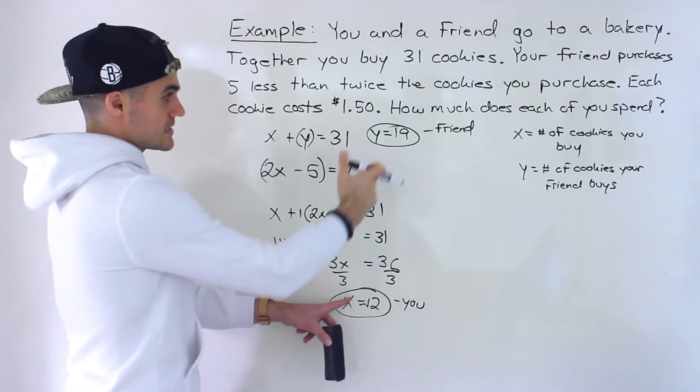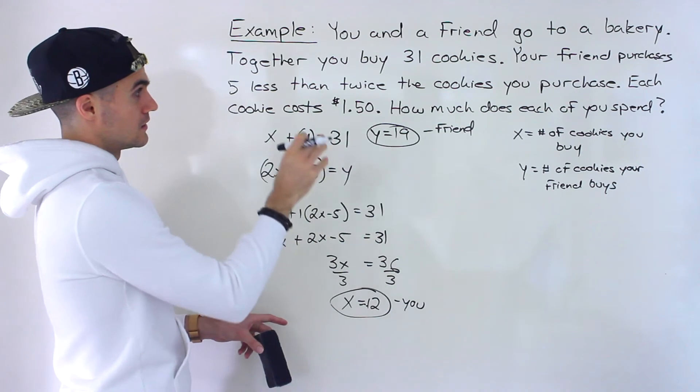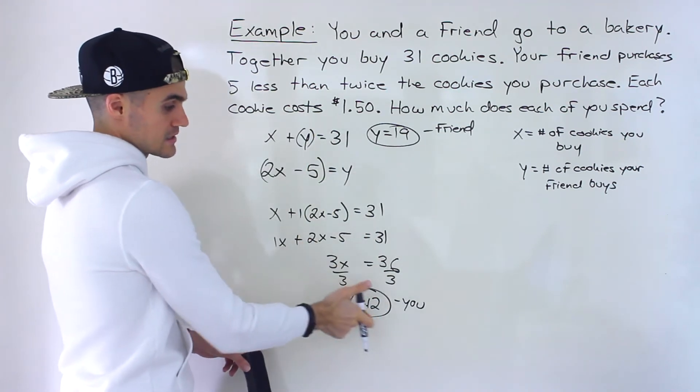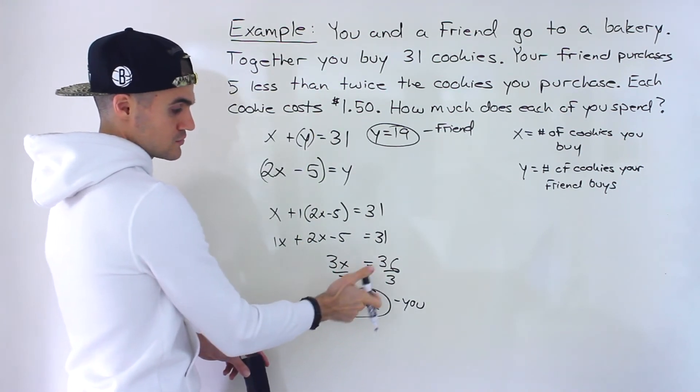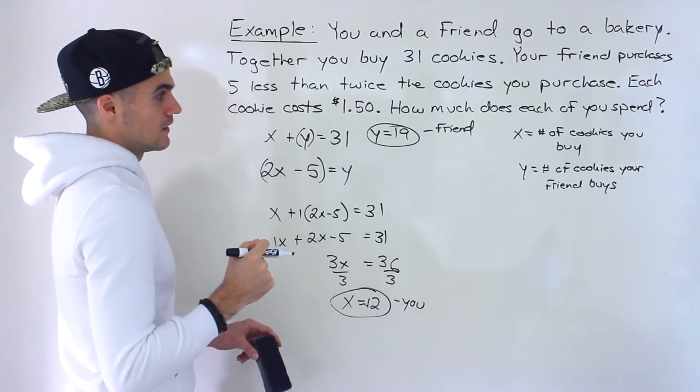And you could test it. 19 plus 12, 31. And then 5 less than twice the amount that you purchase. So 2 times 12, 24 minus 5 is 19.